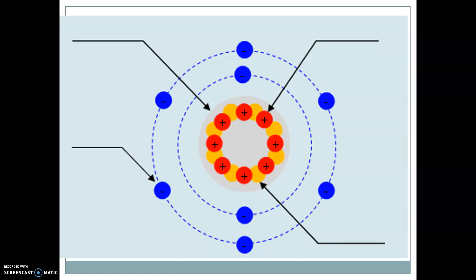Alright, so this is an example of the Bohr model. We have the nucleus in the center. You don't have to be as detailed. It's all of the protons and the neutrons, but basically we have the nucleus in the center and then electrons around the outside.